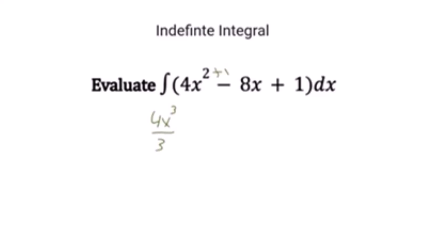Here, negative 8 doesn't have a power, so it's going to be 1, and we're going to add it by 1. So we're going to write down minus 8x to the power of 2 over 2.